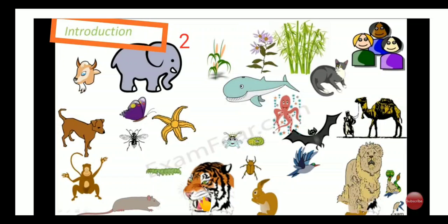We can say that species continue to live generation after generation. Toh hum keh sakte hain ke iski jawab yeh hogi ke wo amal tauleed ka amal hai jis ki waja se maut ke bawajood bhi nasl baqi rehti hai. So we can say that reproduction is the vital process without which species cannot survive for long.